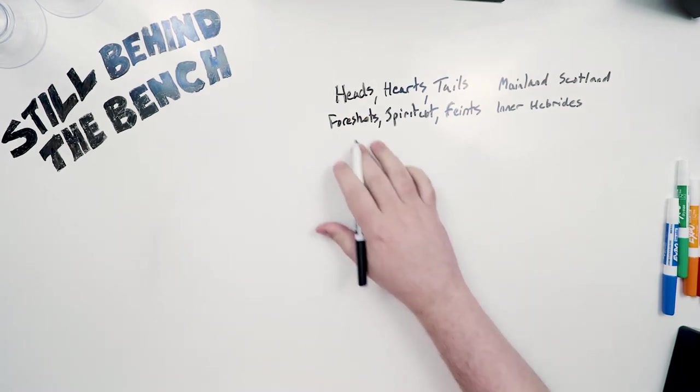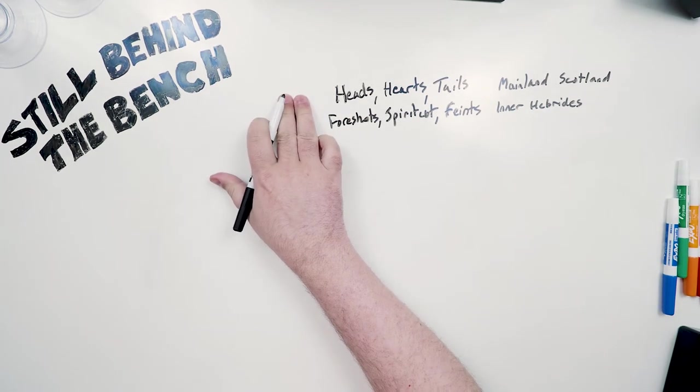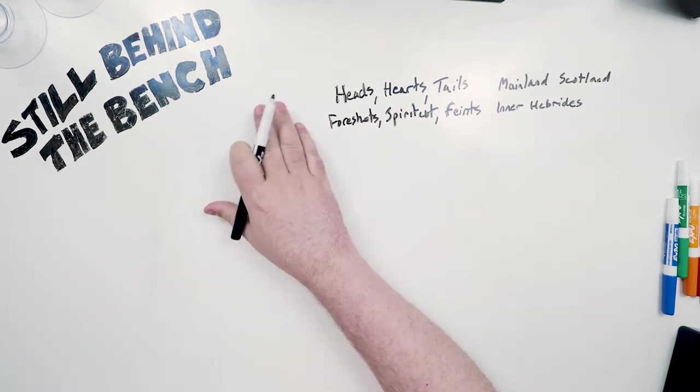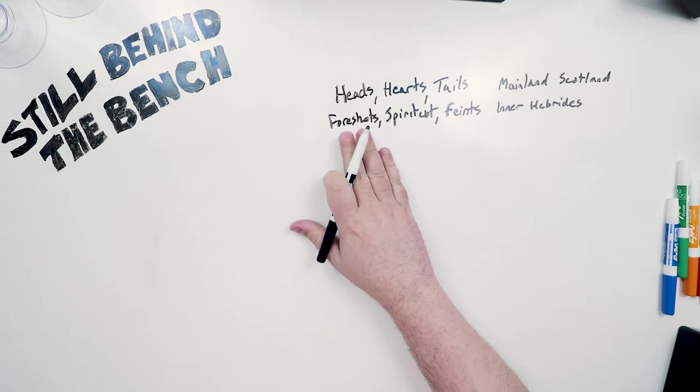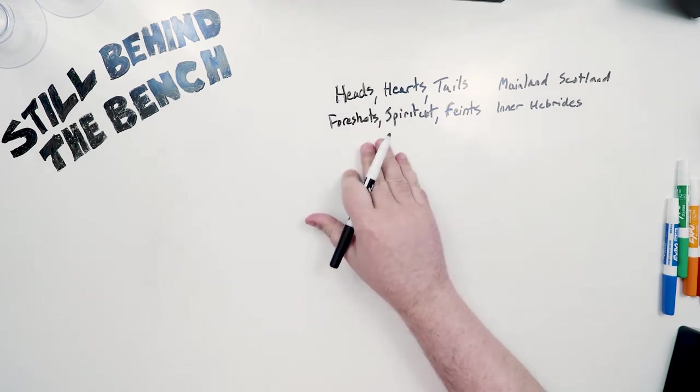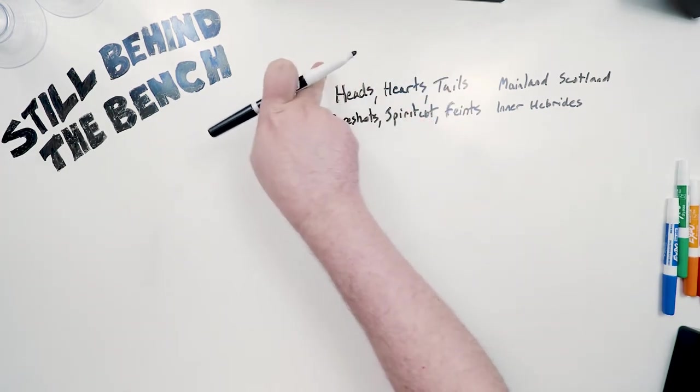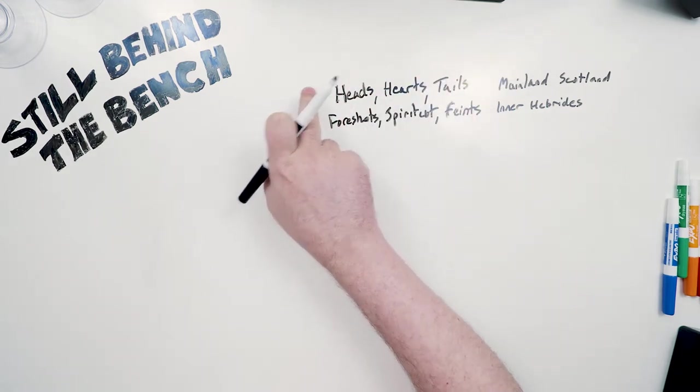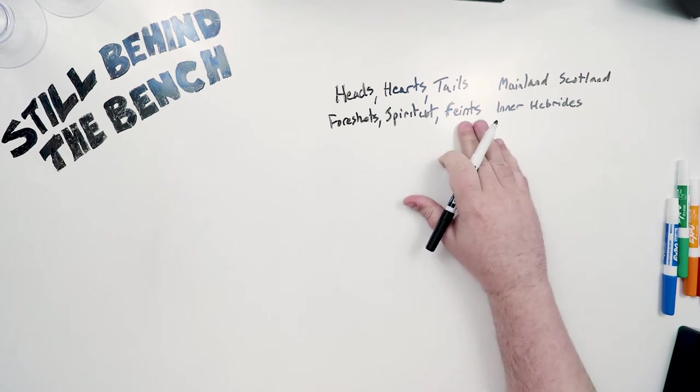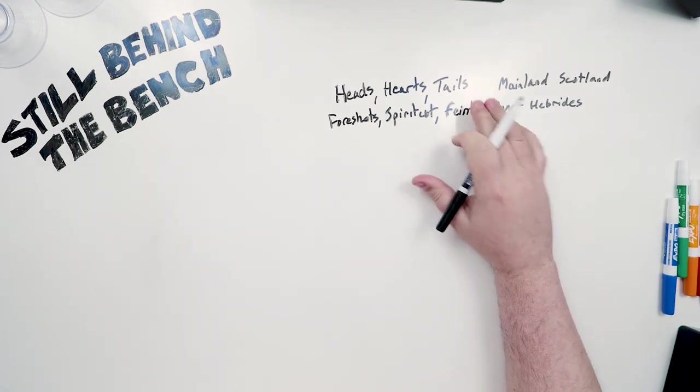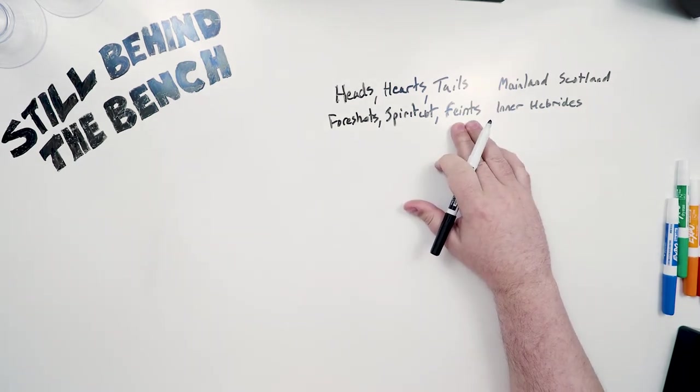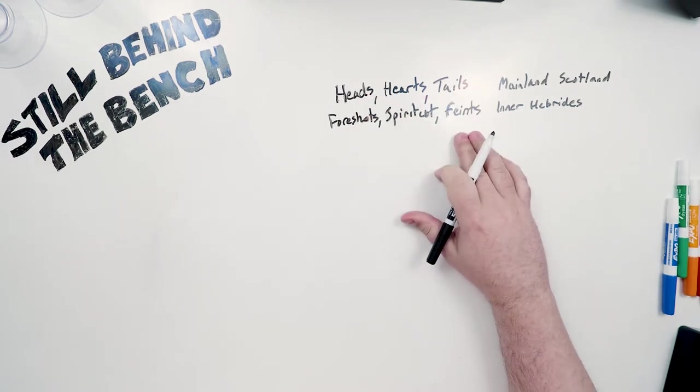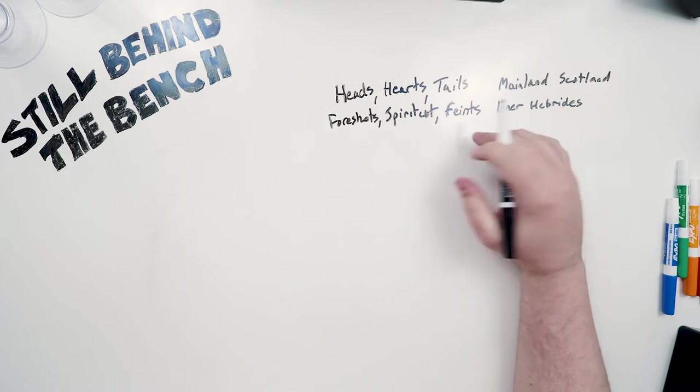Sometimes you'll hear people talk about foreshots as if it's a fourth cut at the very beginning. I think what happened is they heard somebody speaking authoritatively mention foreshots as if it was a first cut and they assumed that they were talking about these three terms and foreshots being a fourth term. Similar to feints and tails where somebody says they threw out the feints. They might have assumed they were talking about tails and heads together as one but feints really just means the tails.